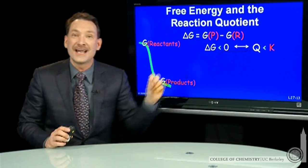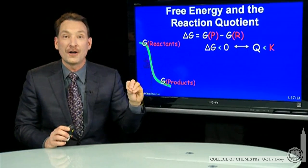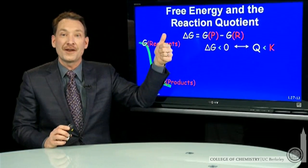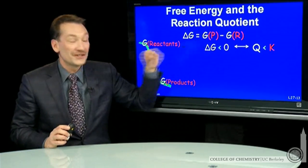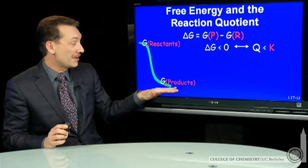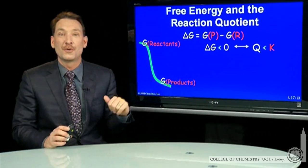A Q less than K says Q is too small. The denominator, the reactants, is too big. I should go towards products. Delta G less than zero says the same thing. Reactants are high, products are low, and I should go towards products.